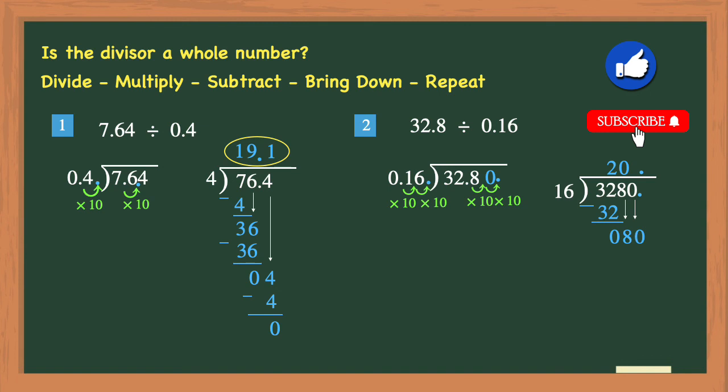Now you have 16 going into 80. And 16 goes into 80 five times. 5 times 16 is 80. 80 minus 80 is zero. So your final answer or quotient is 205.